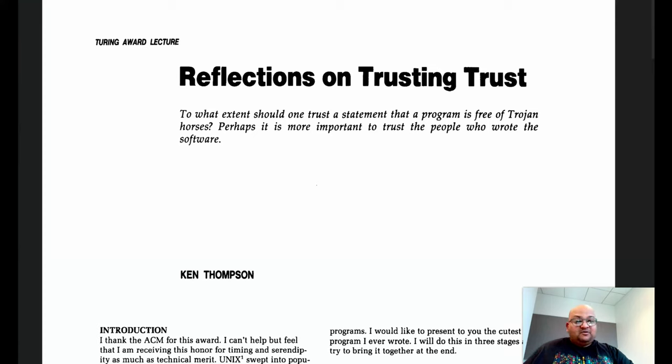Today I want to look at a paper by Ken Thompson, who was awarded the Turing Award along with Dennis Ritchie back in 1983 for their contribution to the design of operating systems and in particular the implementation of the Unix operating system.